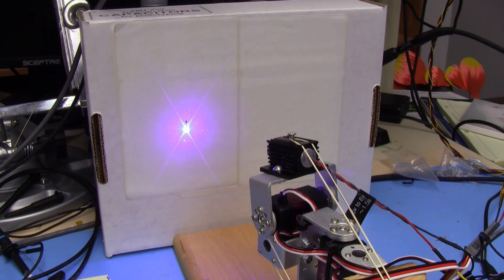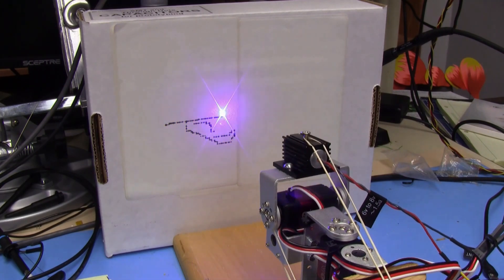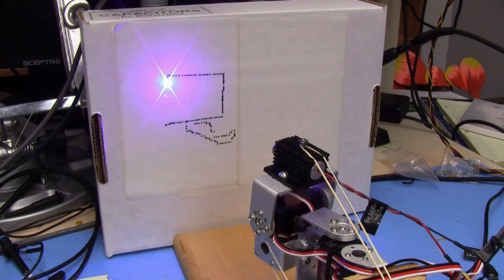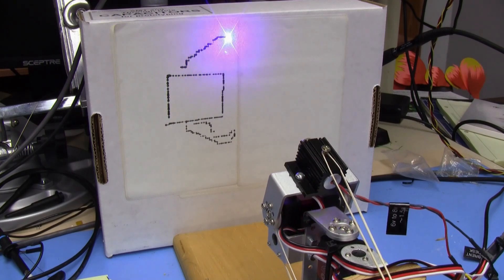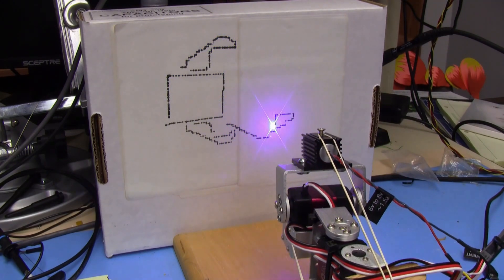We tried making the laser move reasonably fast, but the response time of the servo and the slop, the mechanical slop in the system kind of made a mess. So what this does is, this is time-lapsed up really quickly. It takes about 30 minutes to draw the logo.